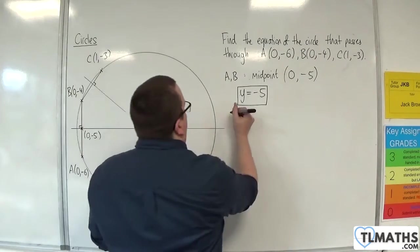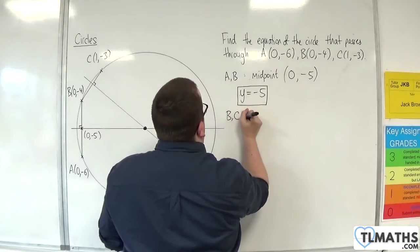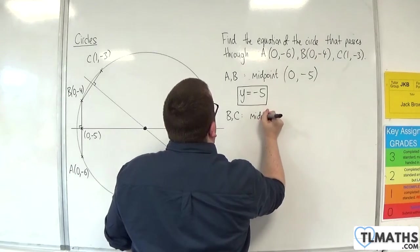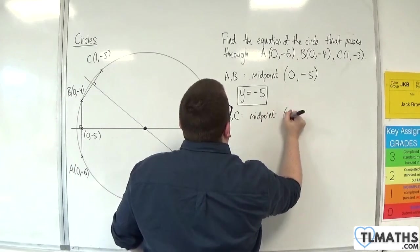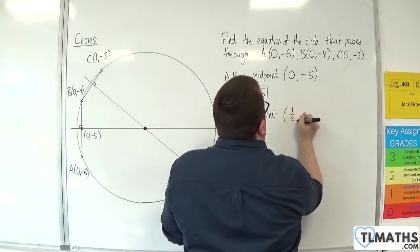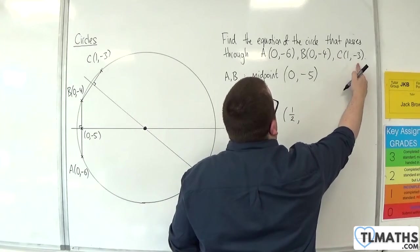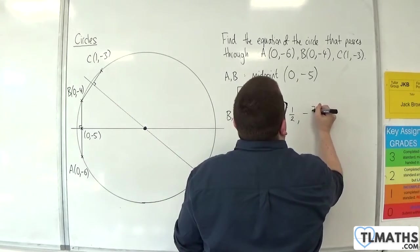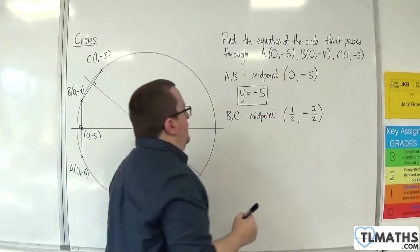So now let's look at B and C. So midpoint first: 0 plus 1 divided by 2 is 1/2. -4 plus -3 is -7, divided by 2 is -7/2. So we've got our midpoint.